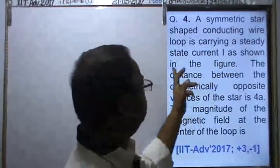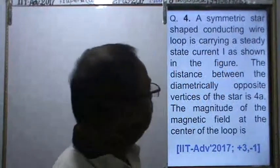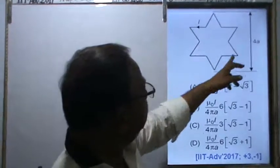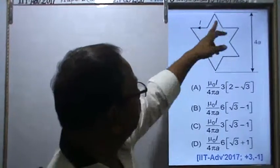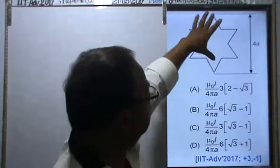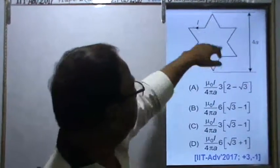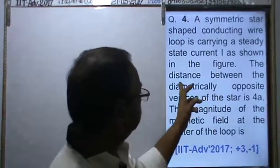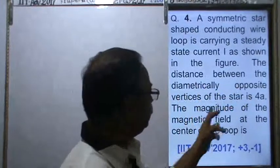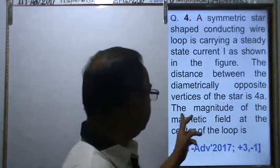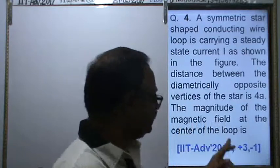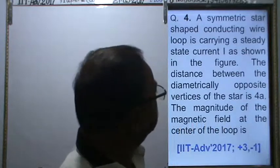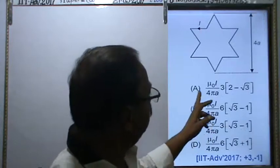Next problem: A symmetric star-shaped connecting wire loop is carrying a steady current I, as shown in the figure. This is the figure - the star set, the current carrying conductor. The distance between the diametrically opposite vertices of the star is 4a. The magnitude of the magnetic field at the center of the loop is given.